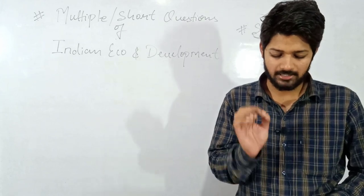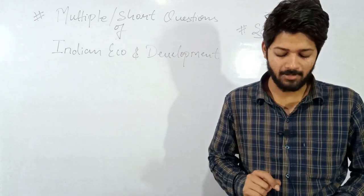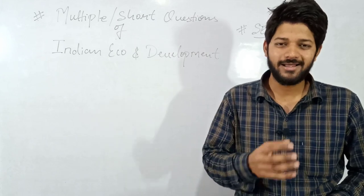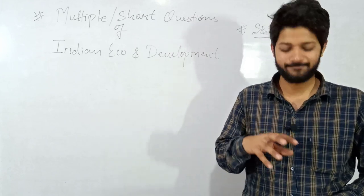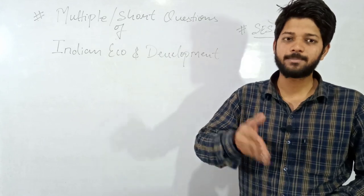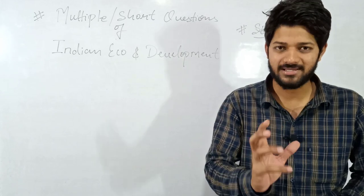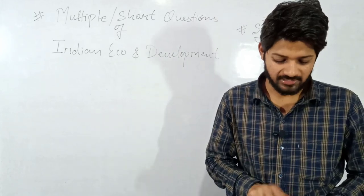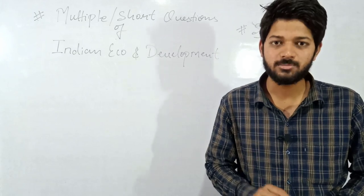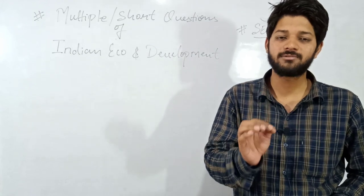Question number twenty-seven: dash is the selling of part of equity of a public sector enterprise to the private sector. Which term describes this? Options: investment, equity sale, disinvestment, transfer of shares. The answer will be the third option — disinvestment.